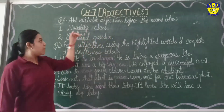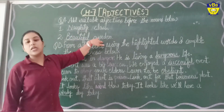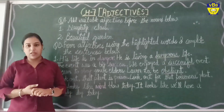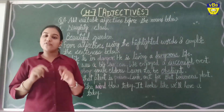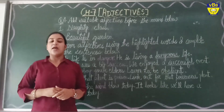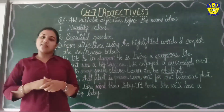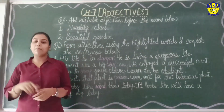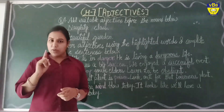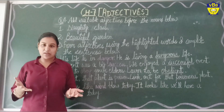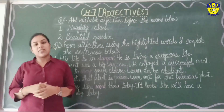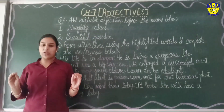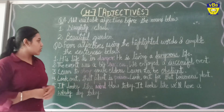Beautiful garden — beautiful is the adjective and garden is the noun. The rest of the parts you have to do by yourself in your homework. You also have to do question numbers B and C in your English grammar book by yourself. Don't be worried because we have already learned about these tasks in our previous class, so let's move forward to the next question.